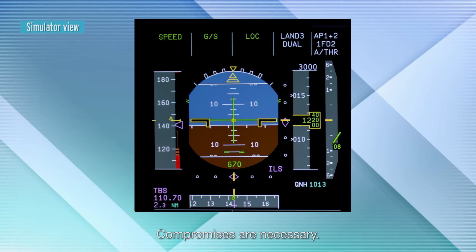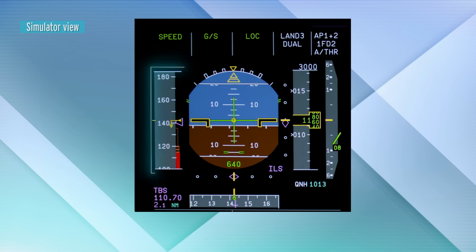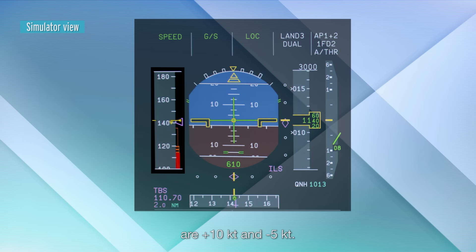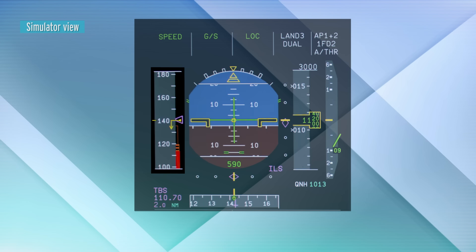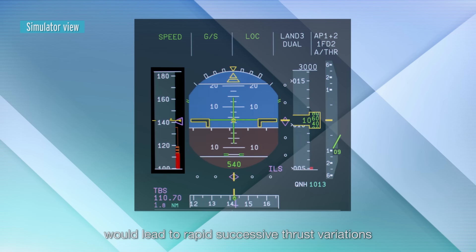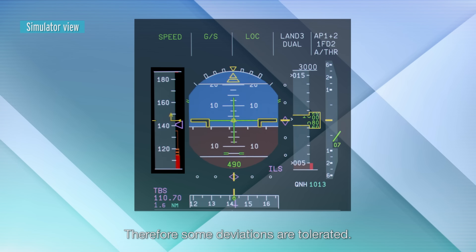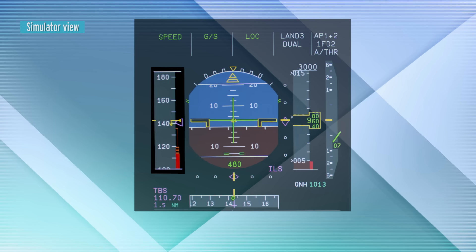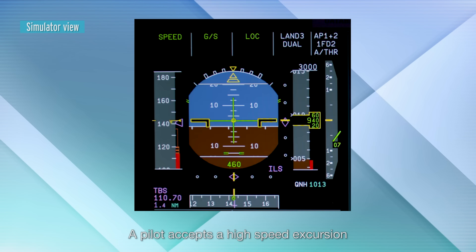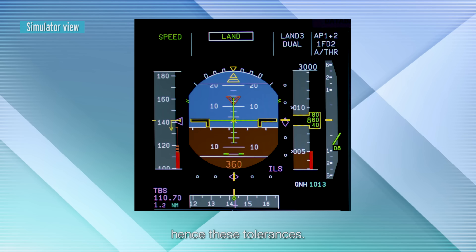Compromises are necessary. For example, the tolerances for speed are plus 10 knots and minus 5 knots. A very precise tracking would lead to rapid successive thrust variations, which are uncomfortable. Therefore some deviations are tolerated. A pilot accepts a high-speed excursion more easily than a low one, hence these tolerances.